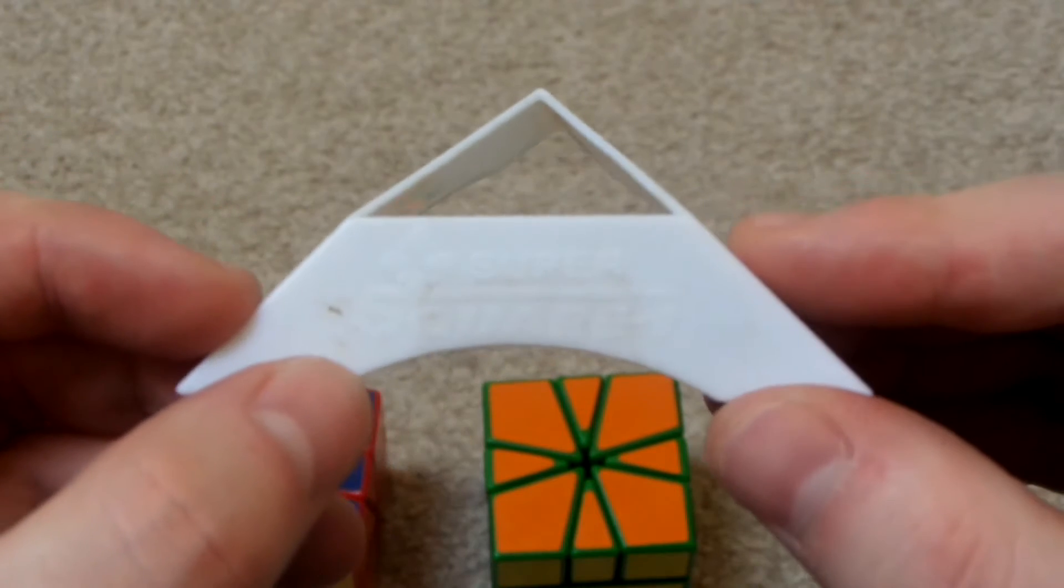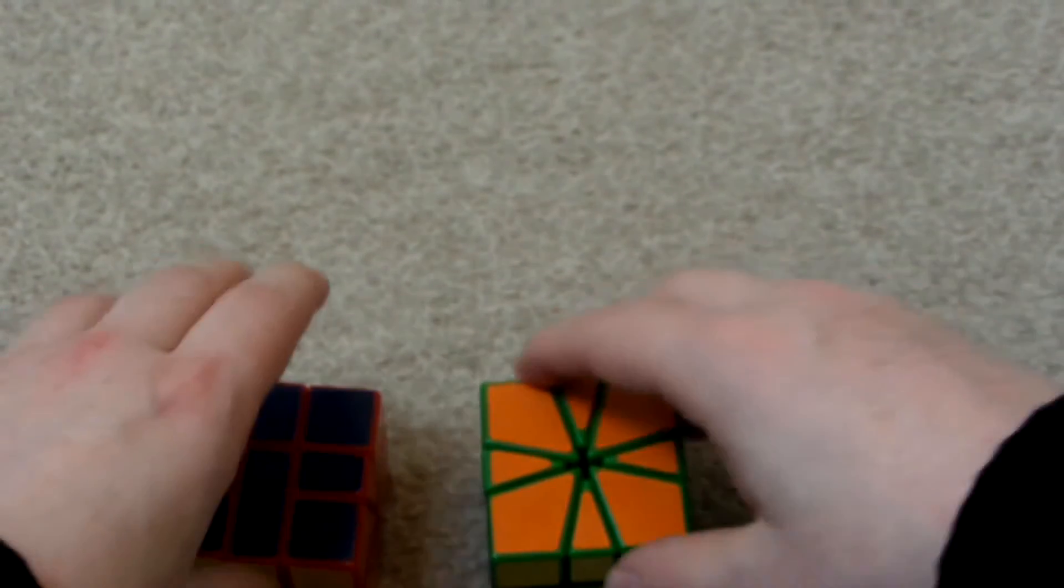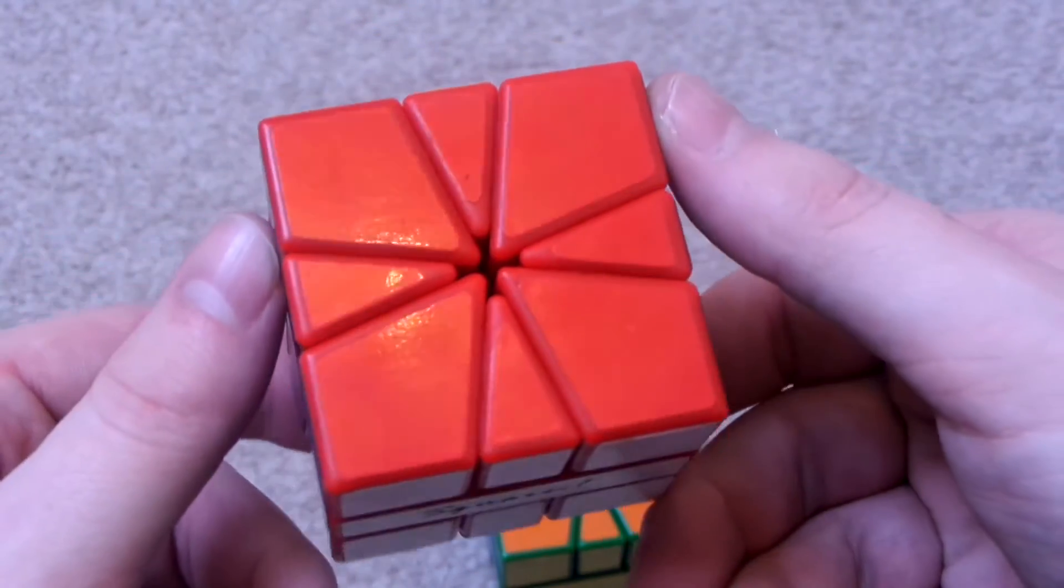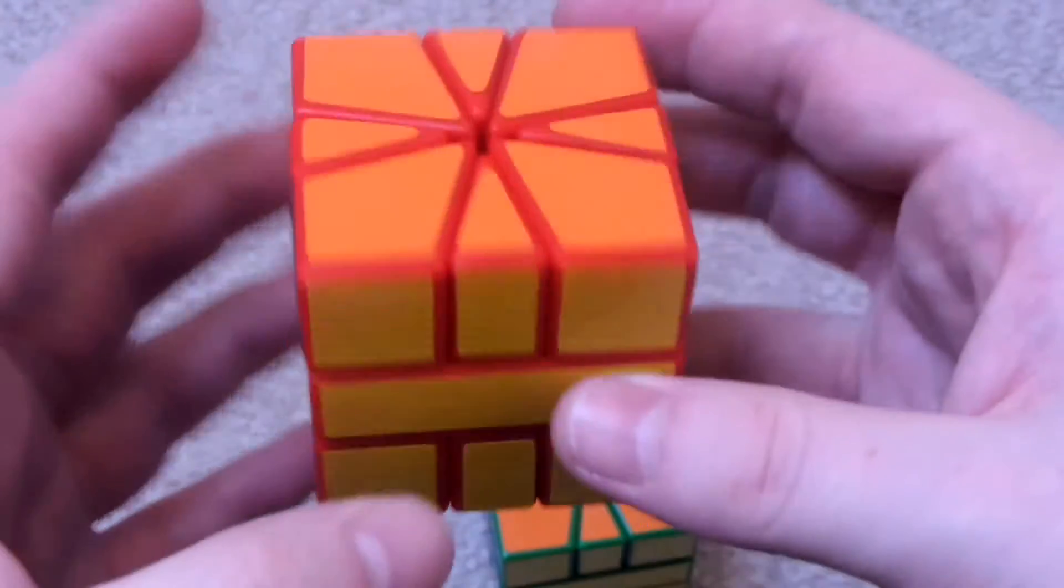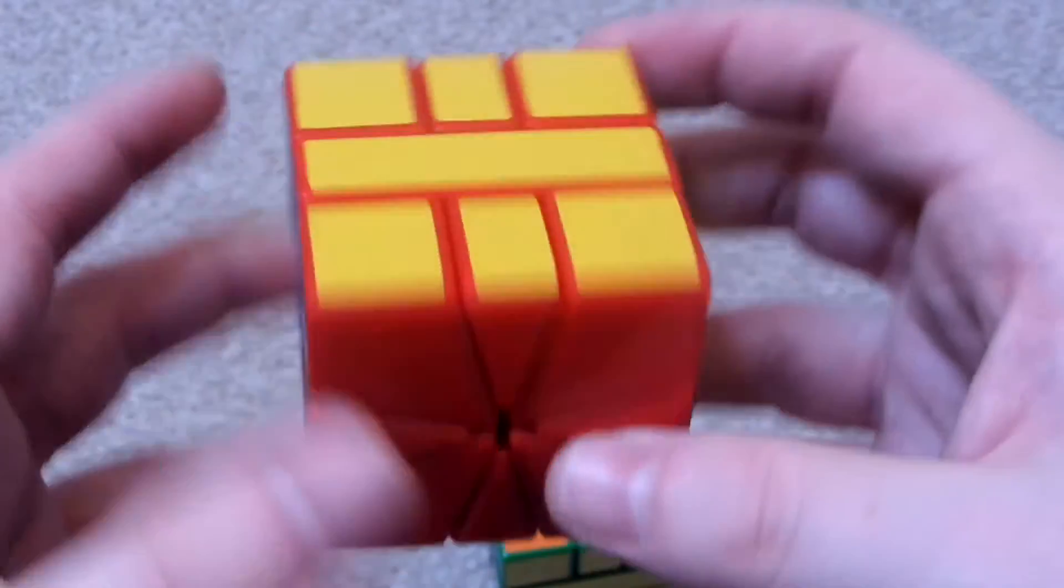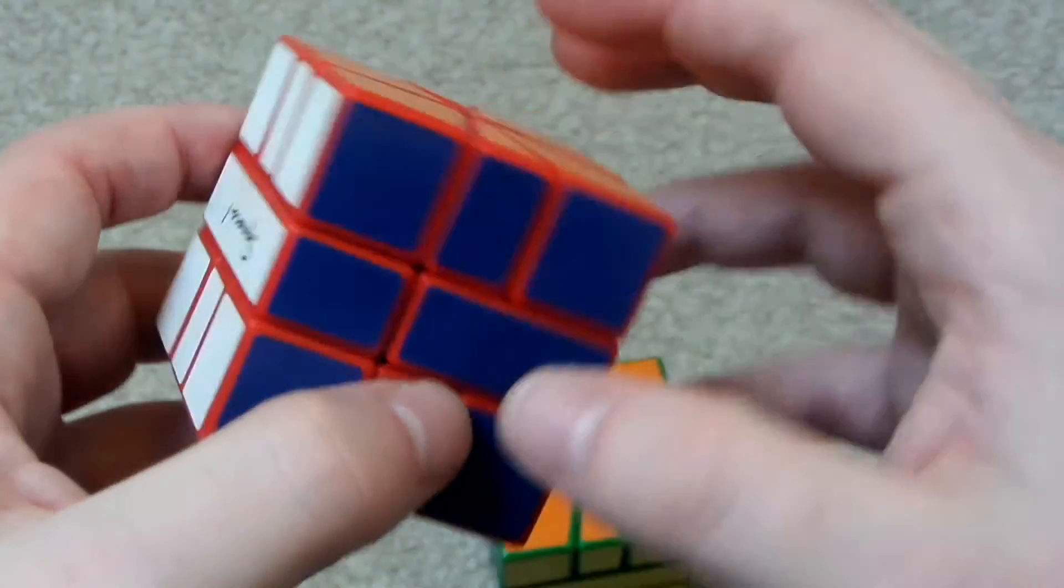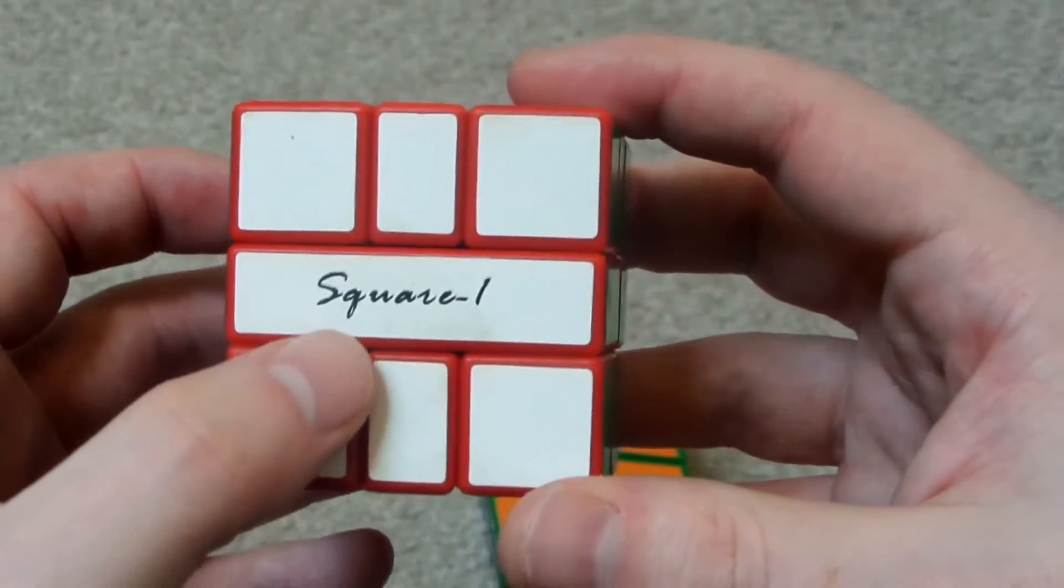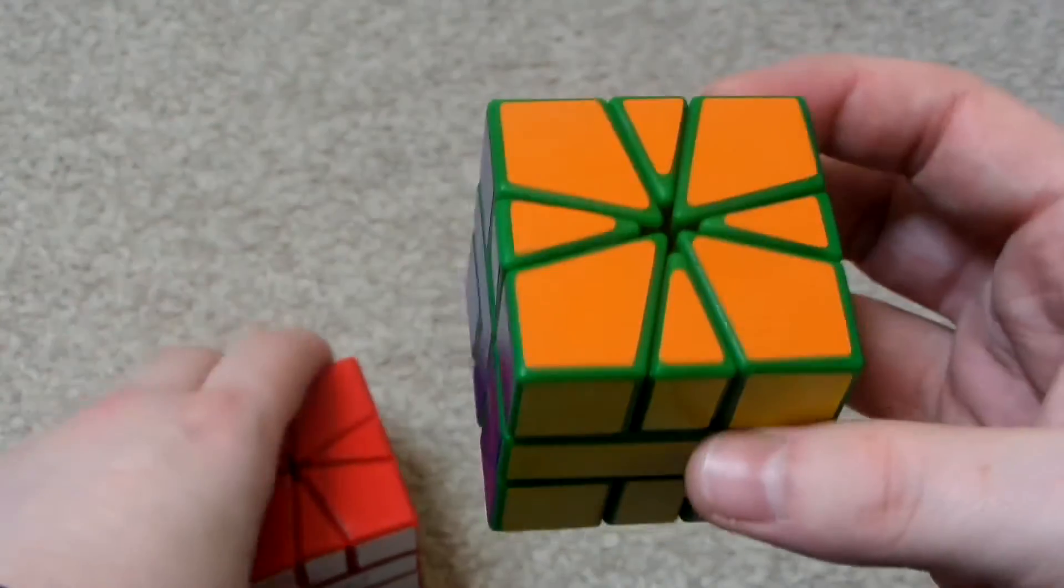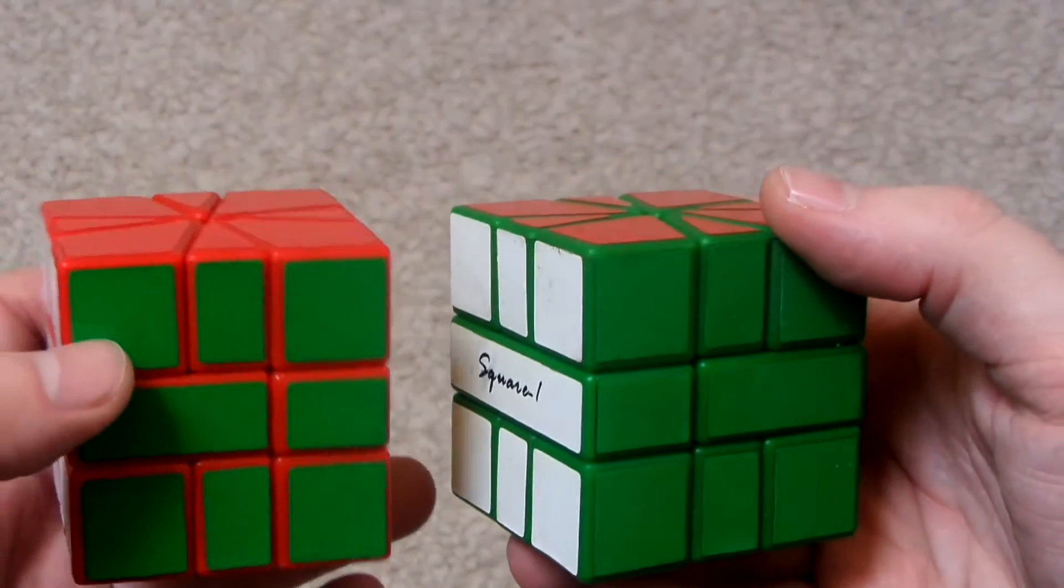And that says the same thing on it, Super Square-1. So yeah, irregular color scheme. So you've got, let's see, we've got orange there, red there, and then yellow, green, white, and blue. And there it says Square-1. And I think the color scheme on this is the same. Yep.